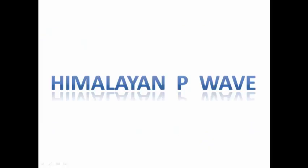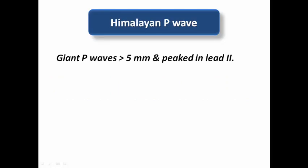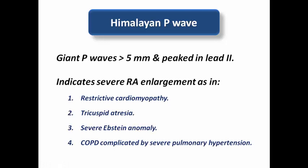Another term in the literature is the Himalayan P wave, named after the Himalayan mountains. This refers to a giant P wave with amplitude more than 5 mm — not just more than 2.5 mm — that is peaked, especially in lead 2 and the inferior leads. It indicates severe right atrial enlargement and can occur in restrictive cardiomyopathy, tricuspid atresia, severe Ebstein anomaly, or COPD complicated by severe pulmonary hypertension. All these conditions share markedly increased right-sided filling pressure.